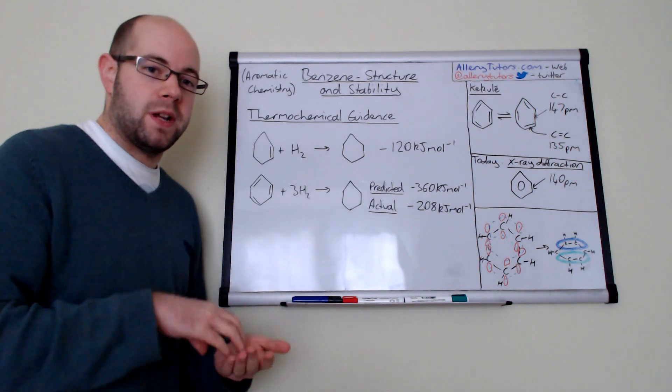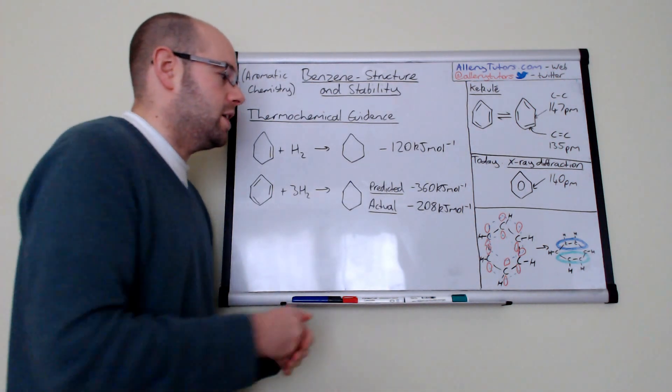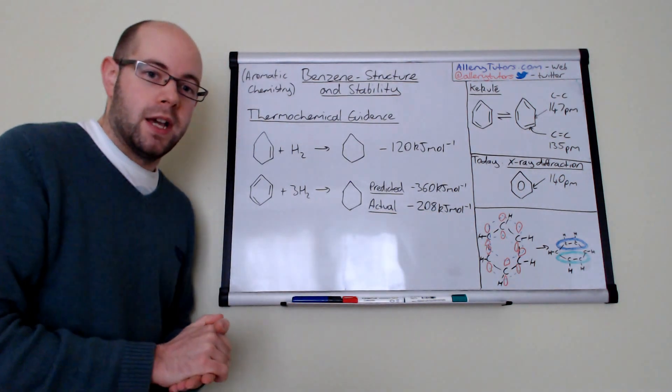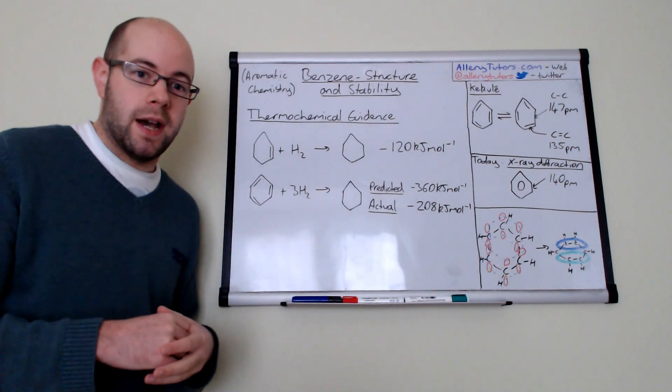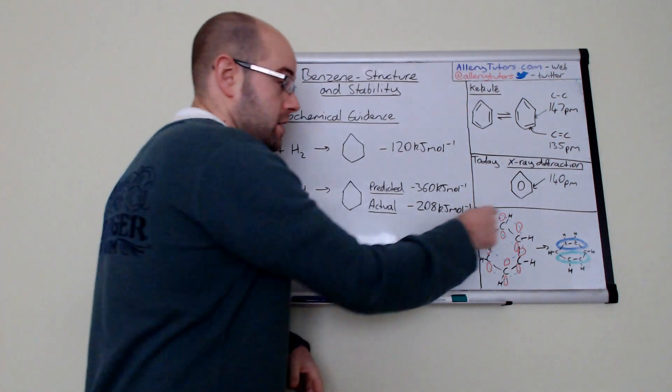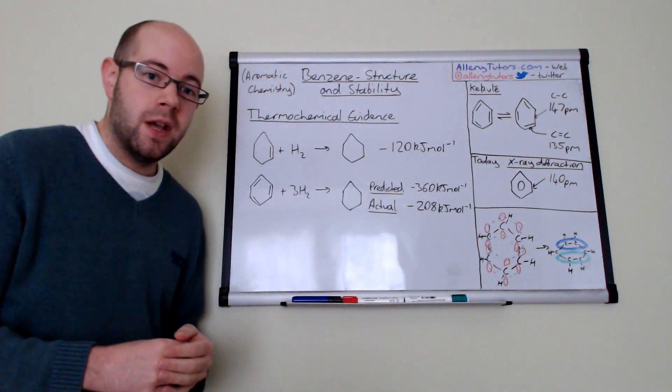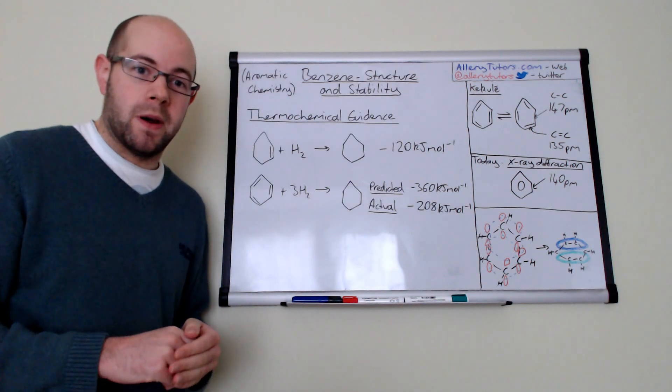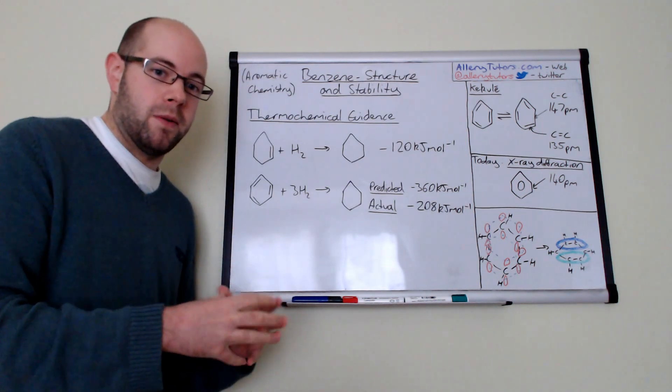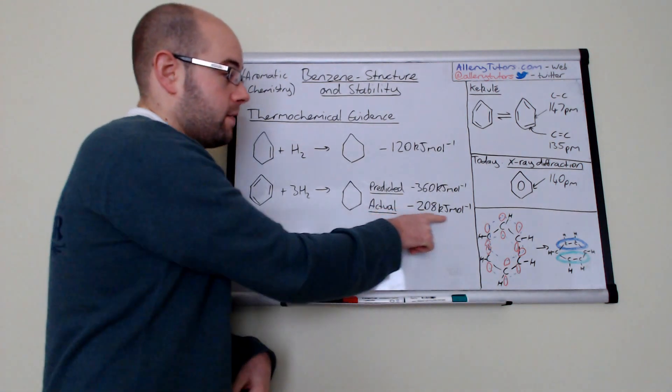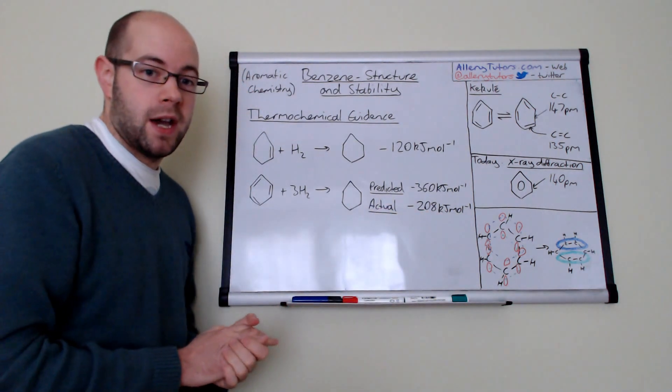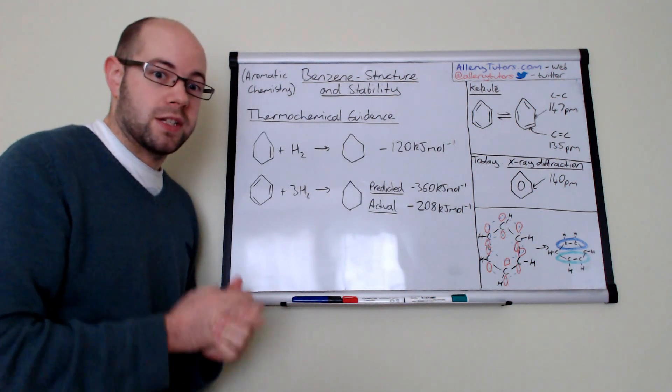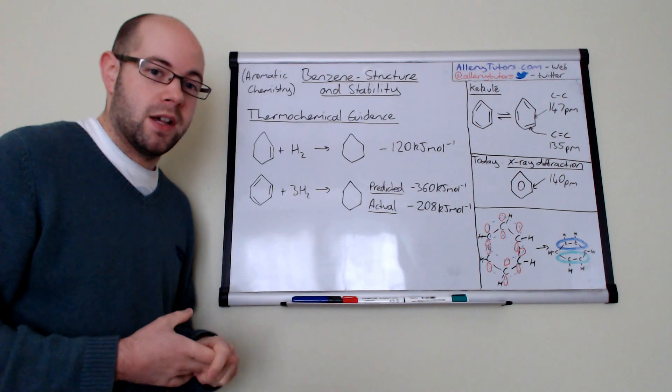This actually suggests that Kekulé's model isn't correct. We can't have three separate double bonds and what we must have is something that's actually a lot more stable than we thought. The reason why this value is lower is because the amount of energy needed to break the bonds in a delocalized benzene system must be a lot greater than the amount of energy that we're actually giving out when we're forming the bonds. Because the endothermic part which is the breaking bonds is a lot larger, then this effectively reduces our actual value of our exothermic value of minus 208.